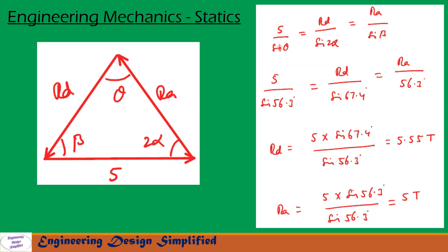Similarly, from first and last terms, we can write RA equal to 5 into sine 56.3 by sine 56.3. From this, RA reaction at A, RA is equal to 5 ton.